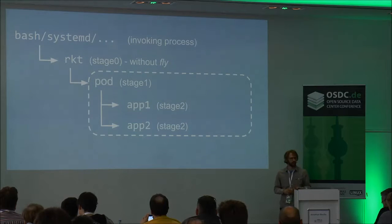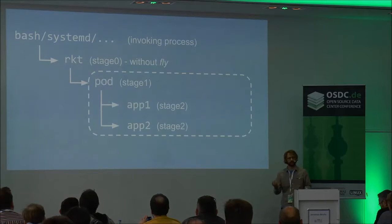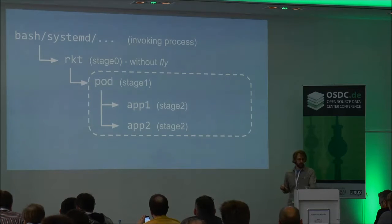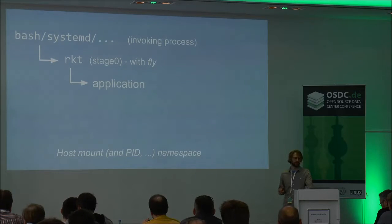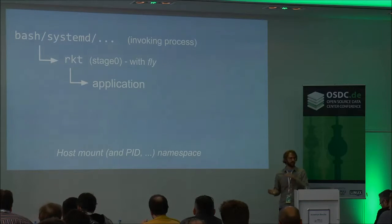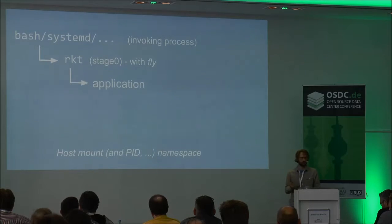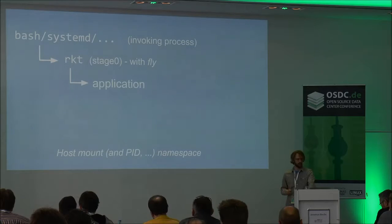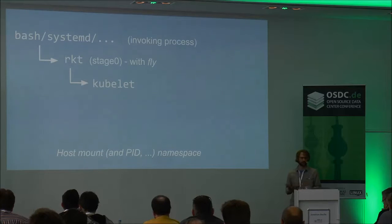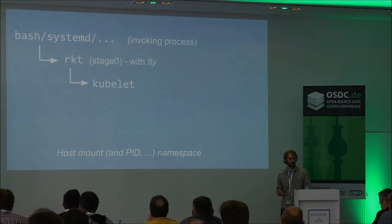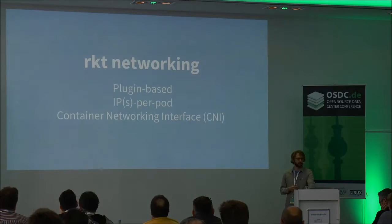With the normal Rocket pod execution, within the pod it's an isolated namespace from the host — isolated mount namespace, network namespace, PIDs, and all those things. With Fly, the application executes directly in the complete host context — everything is shared with the host: PIDs, network, mount, and everything like that. The only difference is that the application starts in its own file system, so it has access to all its own libraries and data. That's how we run the kubelet on CoreOS — a simple wrapper script executes the kubelet using Rocket Fly to pull down the version of the kubelet you specify and then run it on the system.